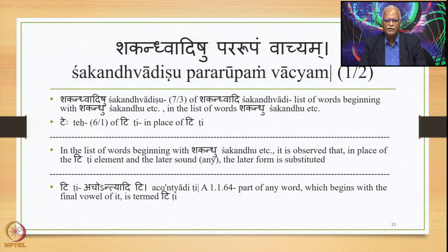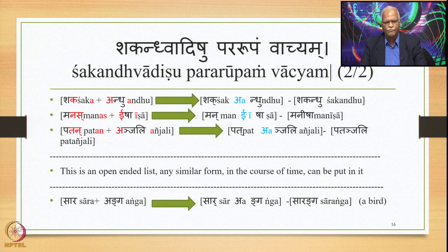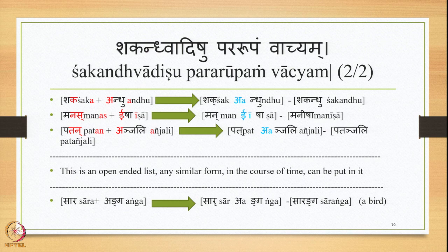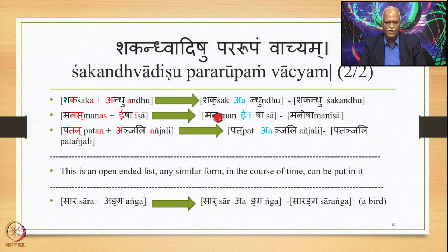Coming back to the Vartika: in the list of words beginning with Shakandhu etc., it is observed that in place of the T element and the latter sound, the latter form is substituted. For example, Shaka plus Andhu — A is followed by A. In place of both, the Pararupa (this A) is substituted. We get Shak + A + ndhu, joined together as Shakandhu.